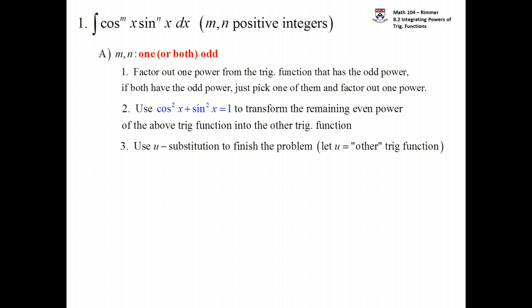And then finally the third step is to choose use u substitution to finish off the problem. If you let u equal the other trig function the one that you didn't factor out the power from, then you'll be able to finish the problem. What you're doing is you're setting aside a power when you factor out and that power will be used in the u substitution by you letting u equal the other trig function. And it works out nice.